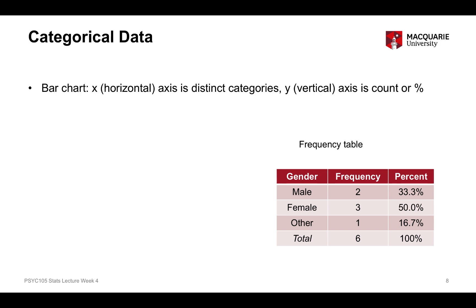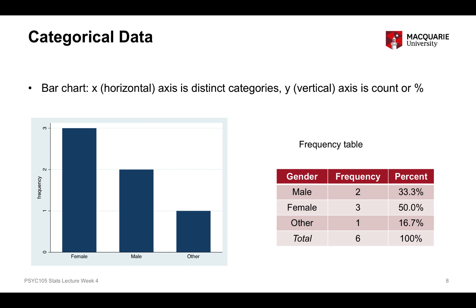The appropriate chart or graph for categorical data is called a bar chart. A bar chart has two axes: the x-axis, which is the horizontal axis, and the y-axis, which is the vertical axis. On a bar chart, the x-axis has each of the categories of the variable — in this case female, male, and other. The y-axis is our frequency, count, or percent axis, telling us how many people fall into each of these categories.